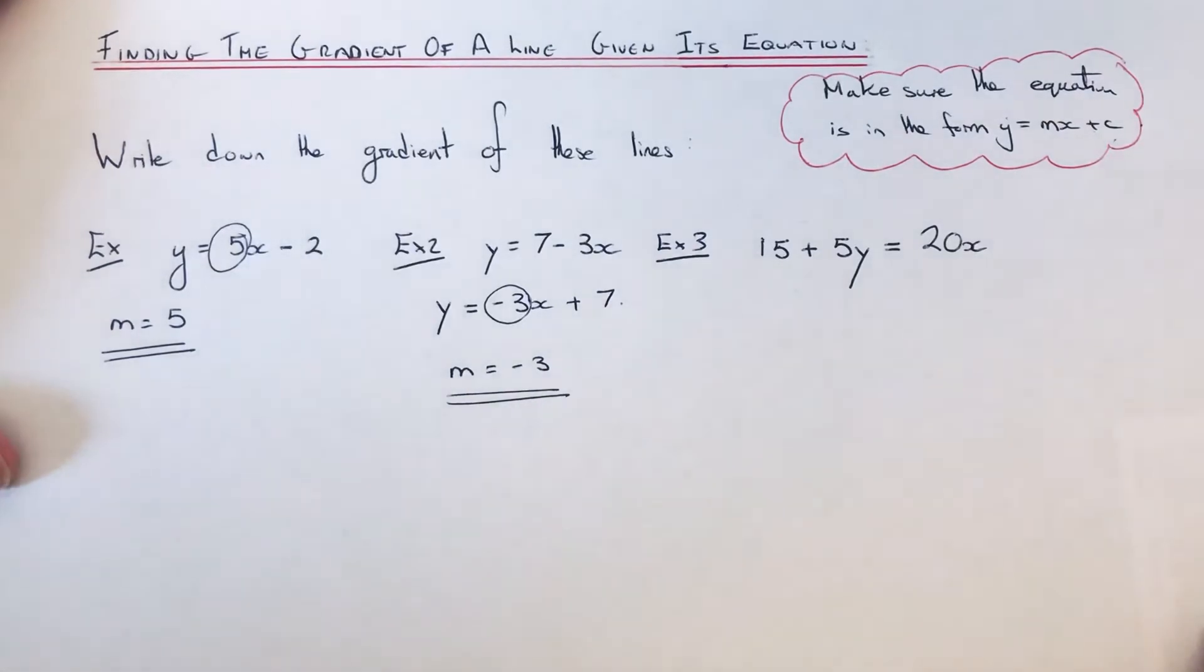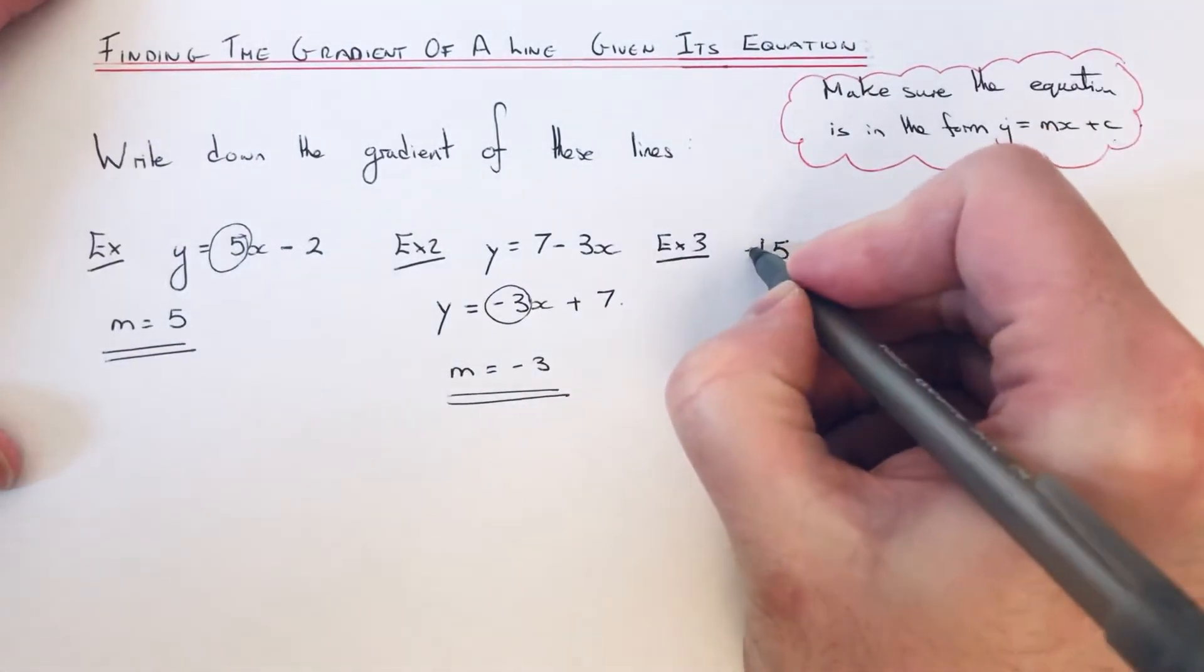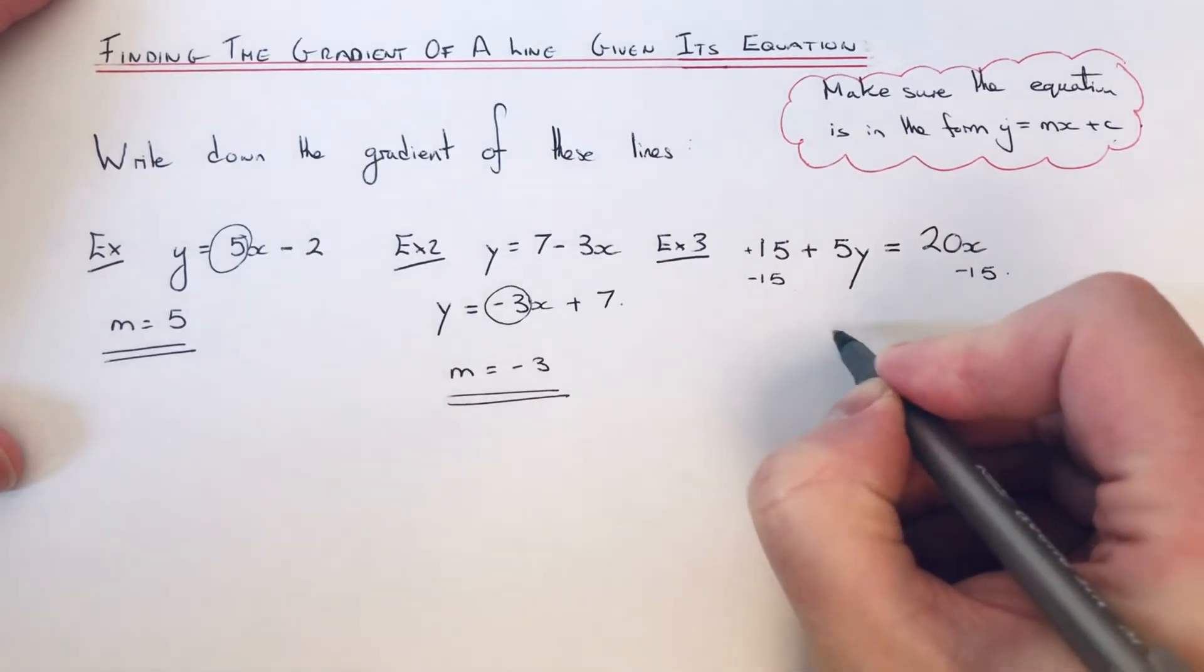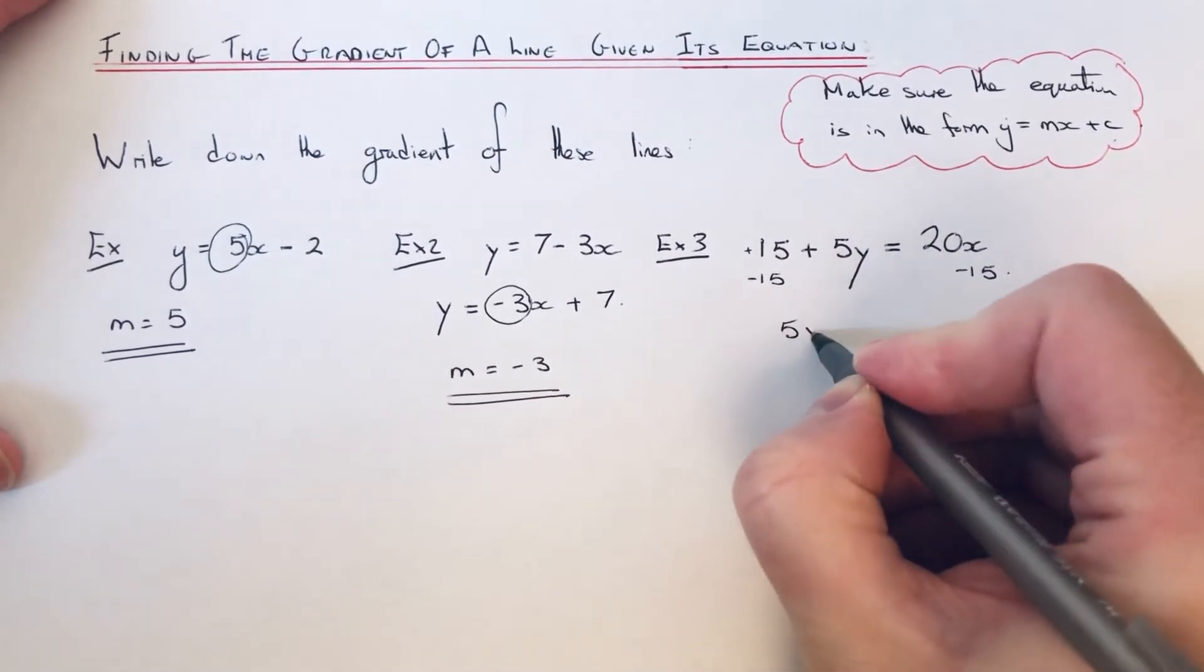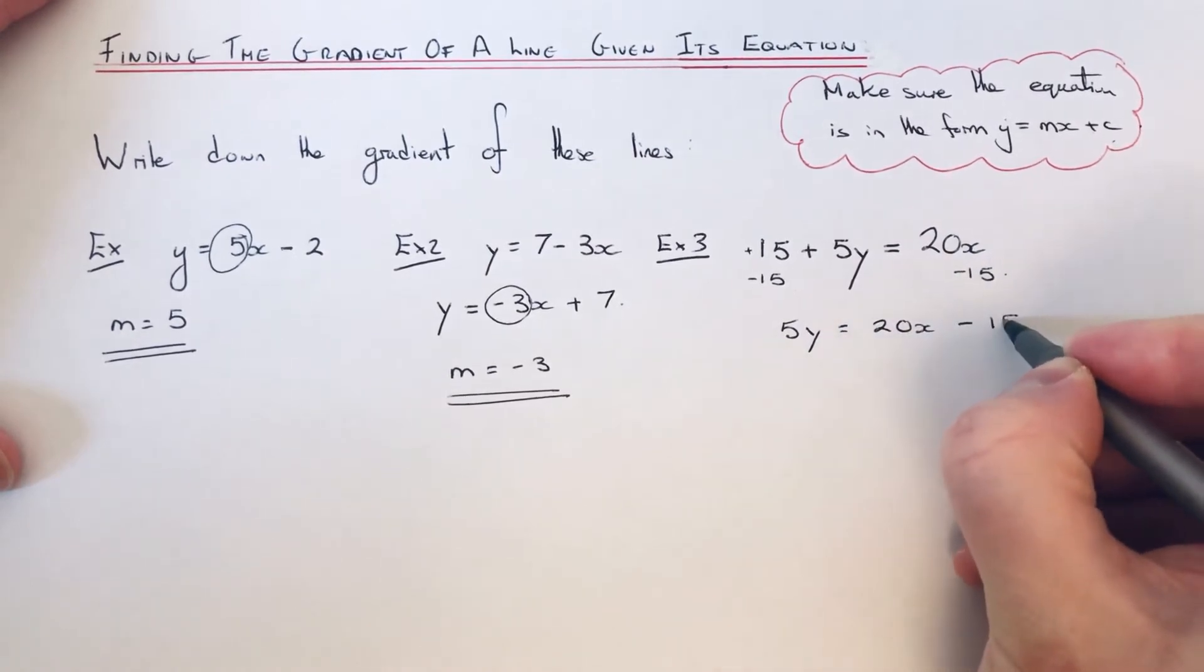Let's look at our final example, this is the hardest one. This time we've got 15 plus 5y equals 20x. On this one we need to make y the subject. If we get rid of the plus 15 first by taking 15 off both sides, this will give 5y equals 20x take away 15.